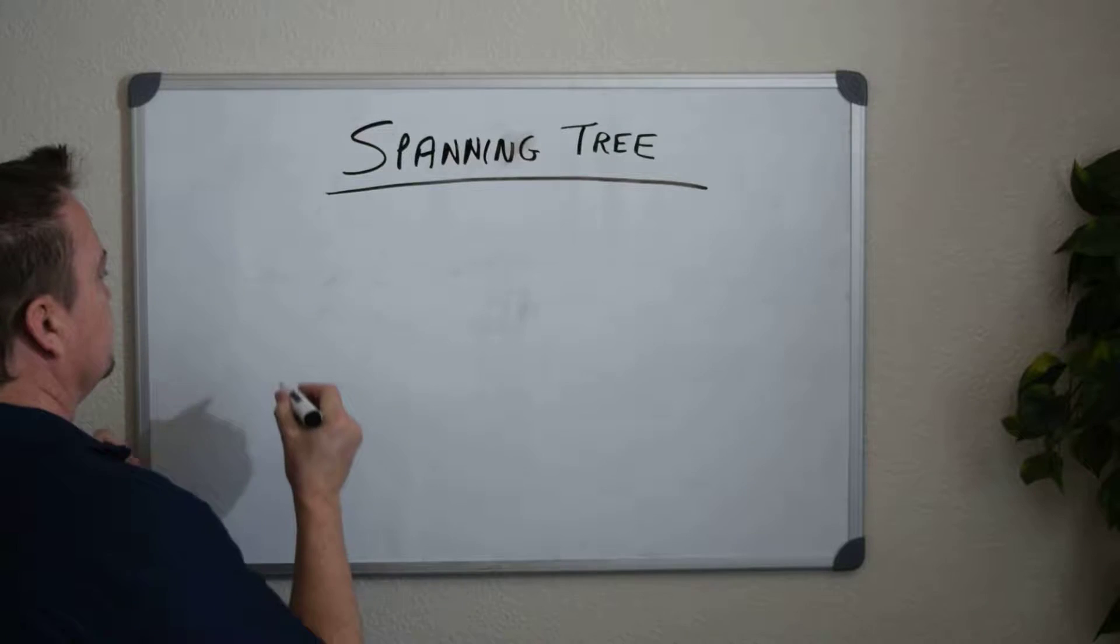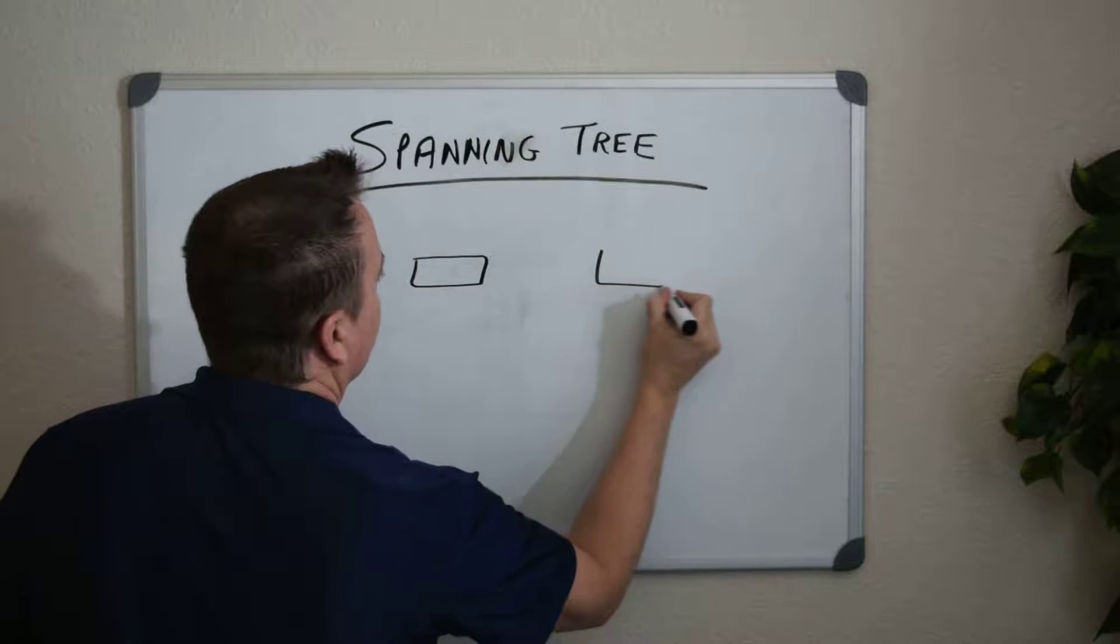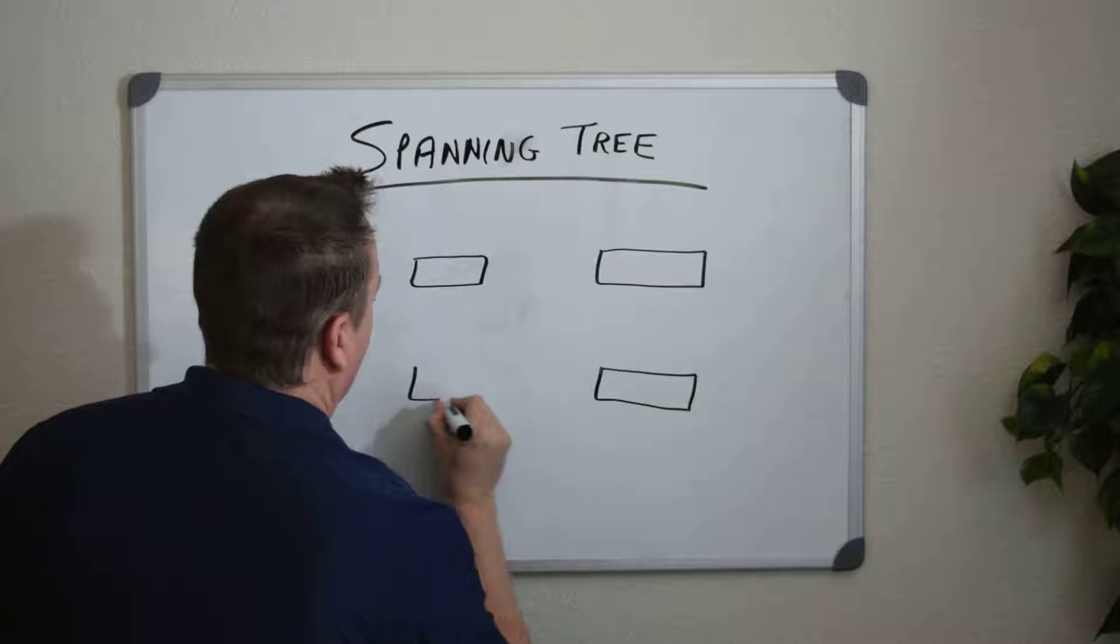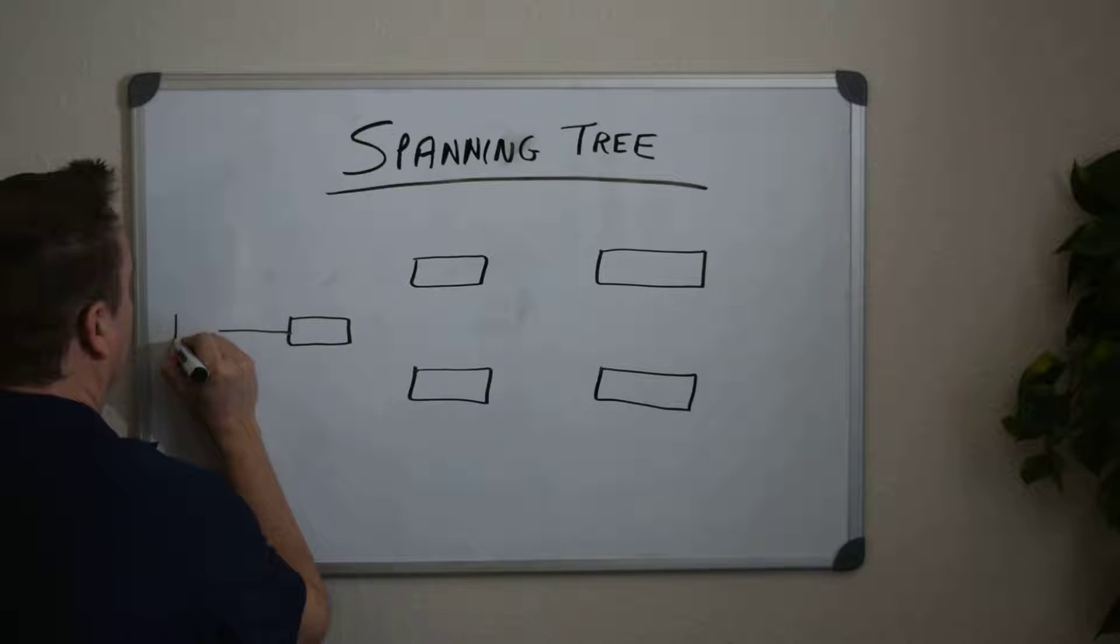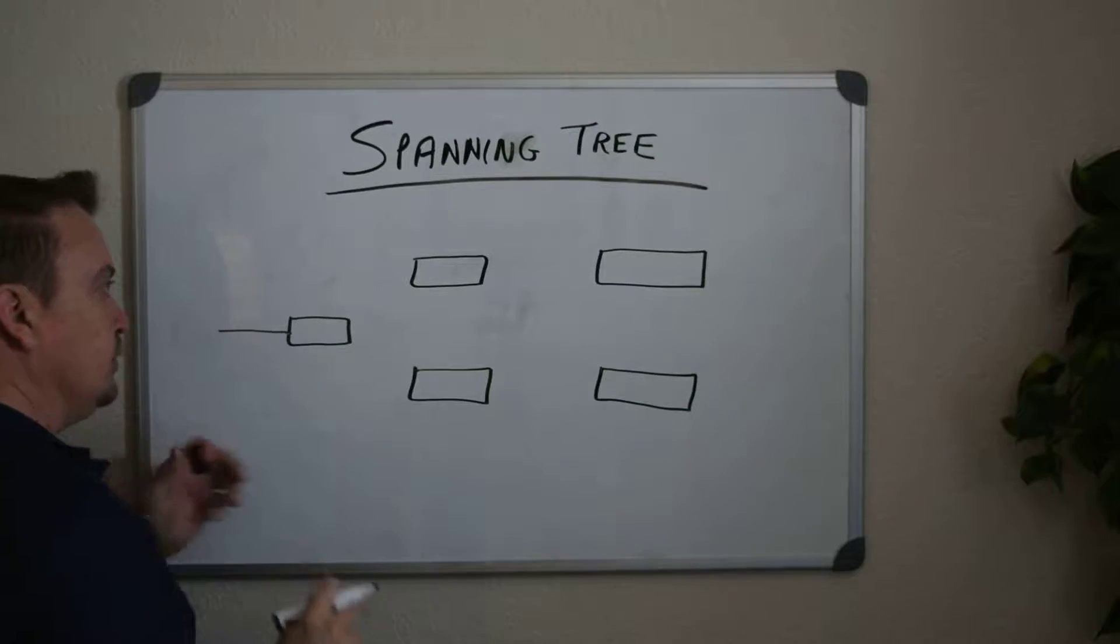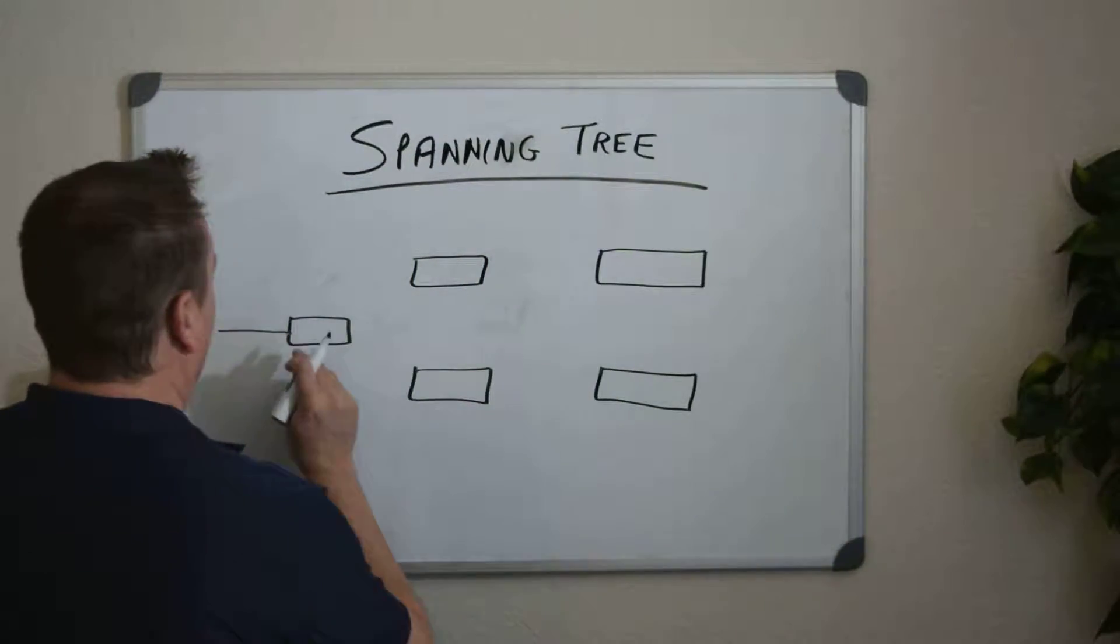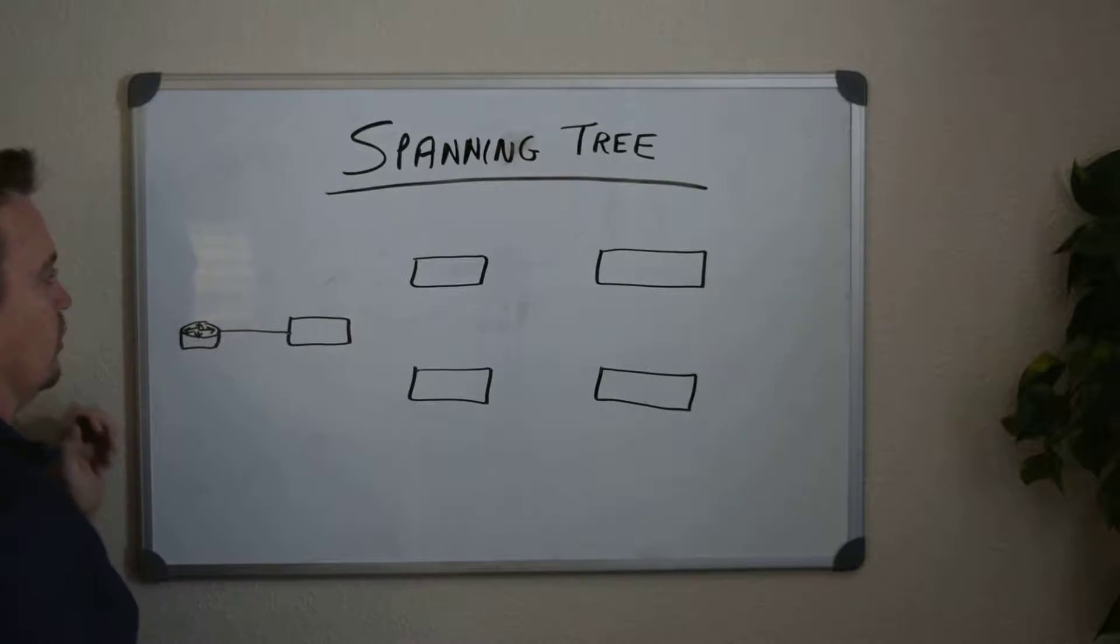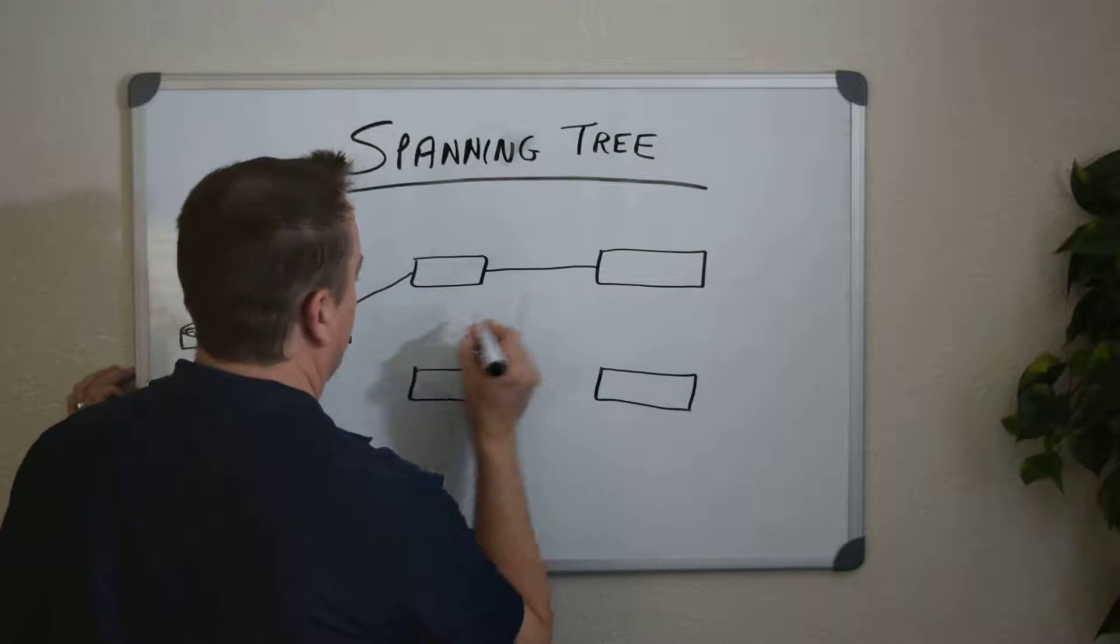So what I want to do is start with a set of Layer 2 devices. We'll just say switches at this point, and these could be in a segment of your network. They could be in a certain building on a network campus, or in a local area network by itself. I'm just trying to draw a router here.